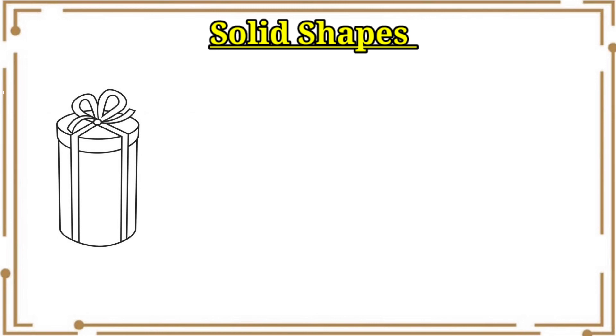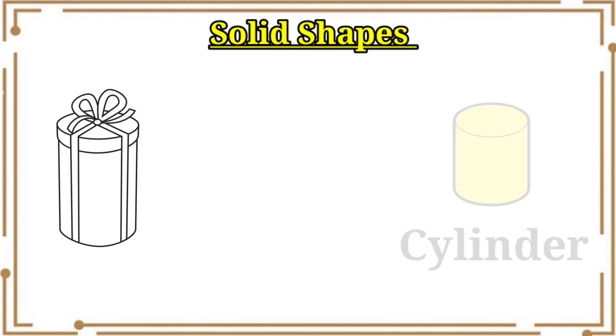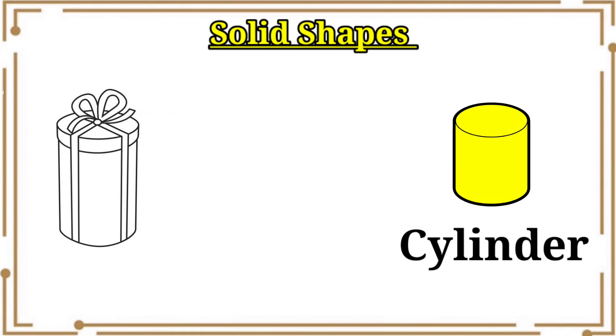Then the next object is gift box. Gift box is in which shape? It is in cylinder shape. So we need to color it in yellow.